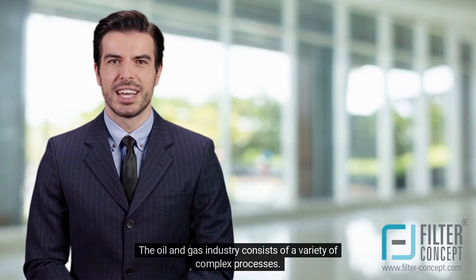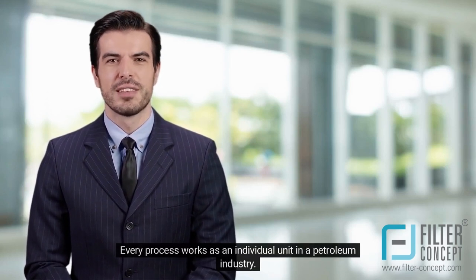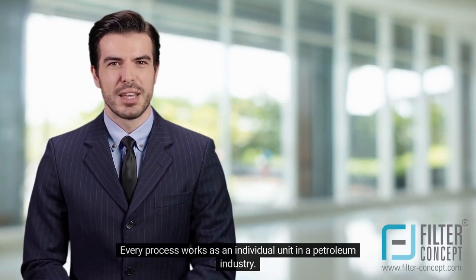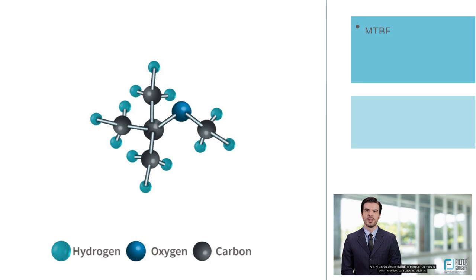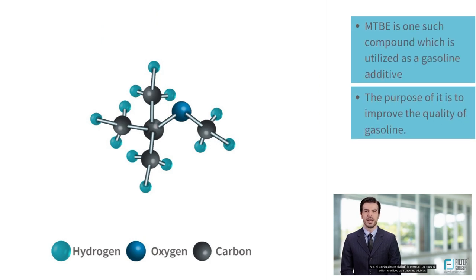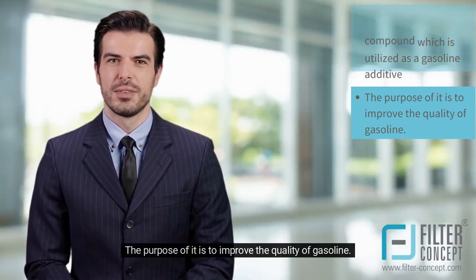The oil and gas industry consists of a variety of complex processes. Every process works as an individual unit in a petroleum industry. A number of processes are used to improve product quality, such as the production of additives. Methyl tert-butyl ether, MTBE, is one such compound which is utilized as a gasoline additive. The purpose of it is to improve the quality of gasoline.